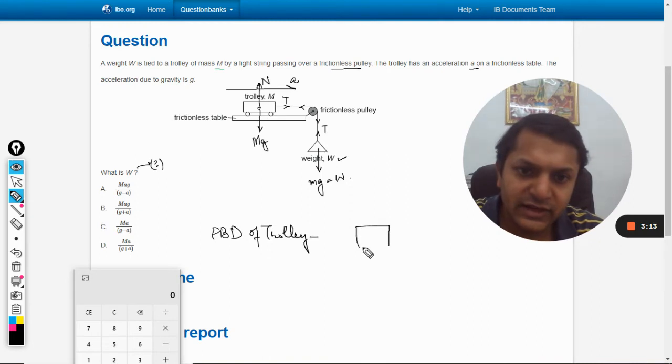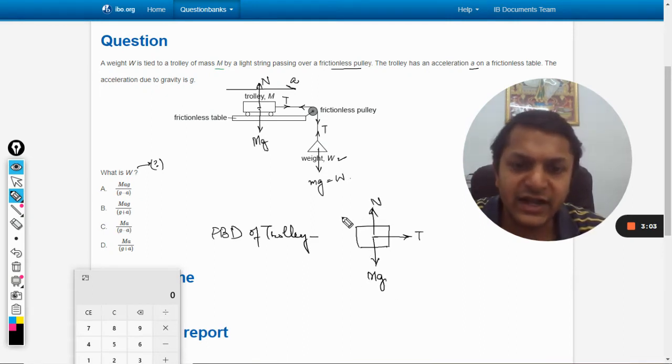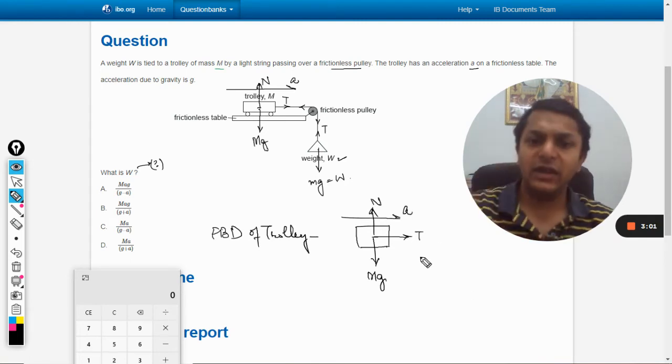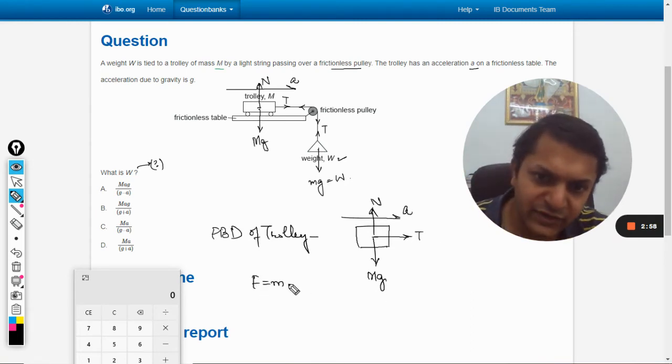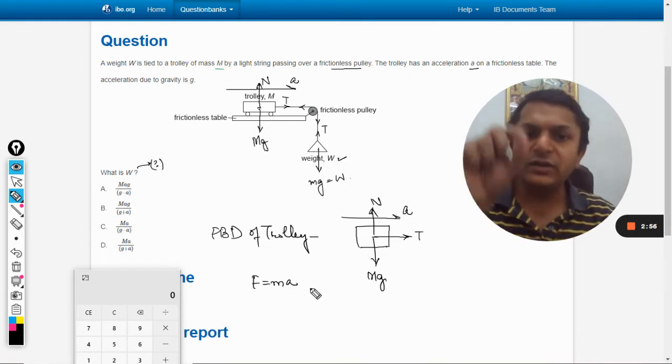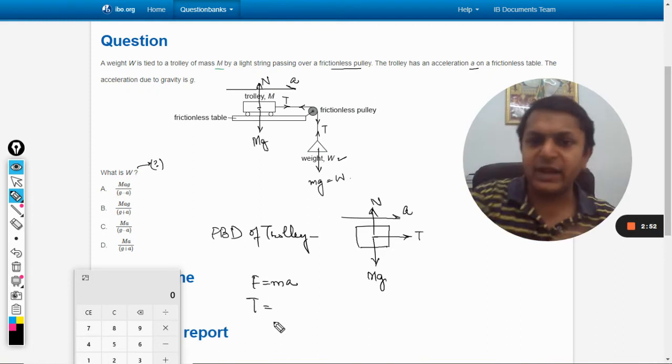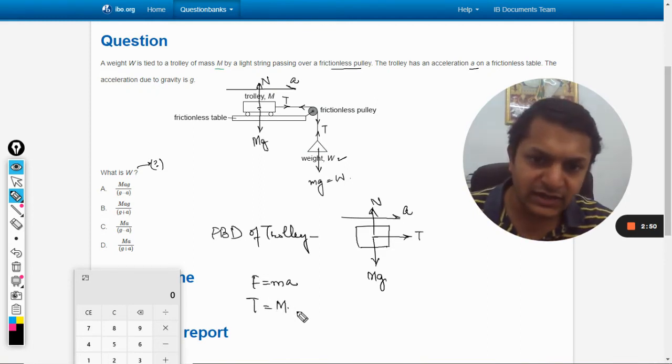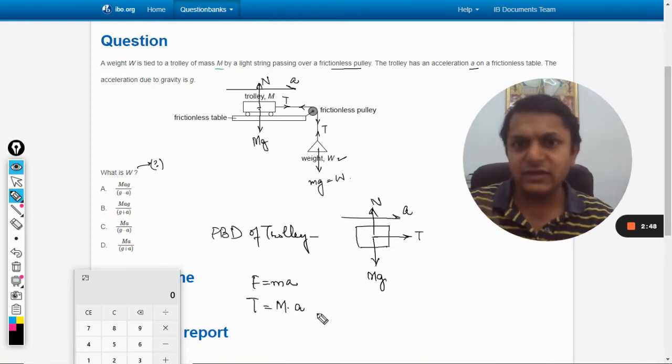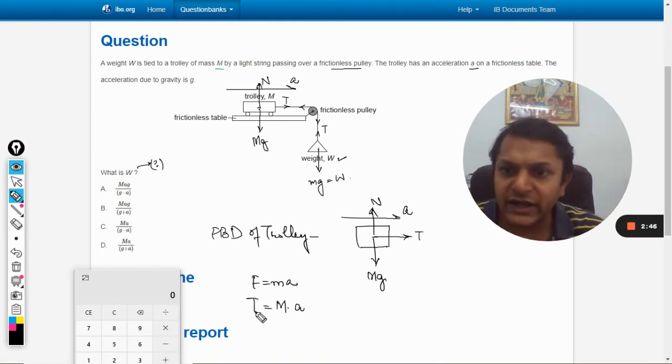This is having a tension force. This is weight mg and this is normal reaction, and the acceleration that it is moving with is a. So I can use the formula F equals m times a. Particularly for this body, the tension is the force applied in the forward direction, mass is m and acceleration is a, so tension T is m times a.